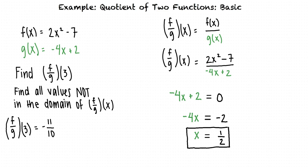So our final answers to this problem are f divided by g of 3 equals negative 11 tenths, and the value that is not in the domain of f divided by g of x is one half.